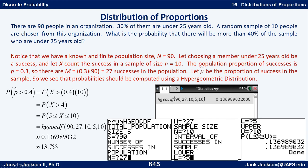Let p-hat be the proportion of successes in the sample. We use the HGOCDF function. The probability that p-hat is greater than 0.4 corresponds to x greater than 0.4 times 10, which is 4. Since x must be a whole number, that means x from 5 up to 10. Running the program with population size 90, number of successes 27, sample size 10, lower 5 and upper 10, gives approximately 0.136989, or about 13.7 percent.